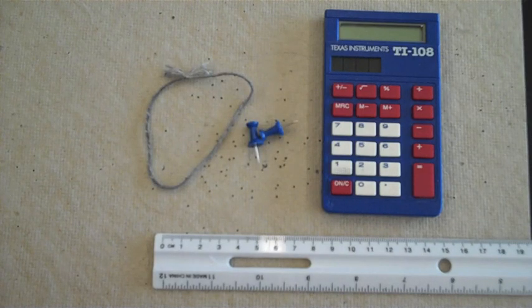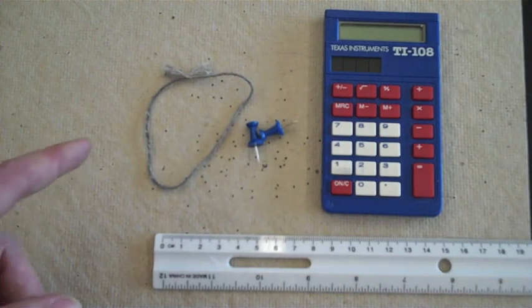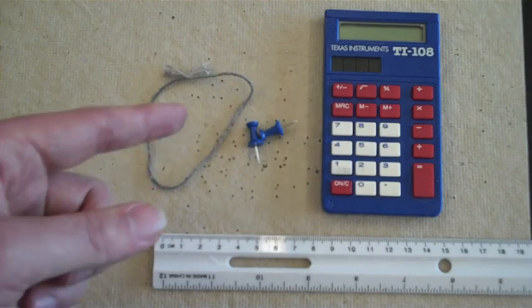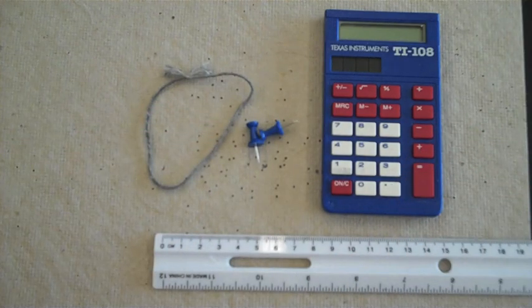To get started, you're going to need a surface to push the pins into. What you're looking at is something called HOMASOTE that's easily bought at Home Depot. You need a string, roughly about 20 centimeters in length, tie it in a loop, a couple of push pins, a calculator, and a ruler that has a centimeter scale on it.